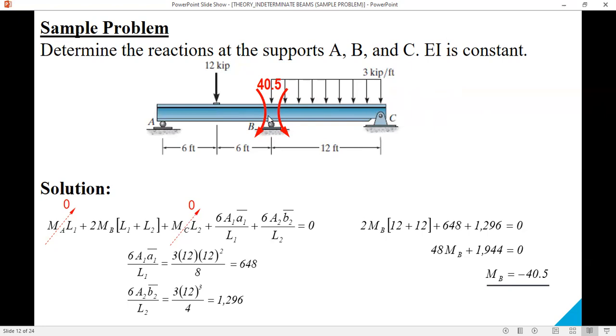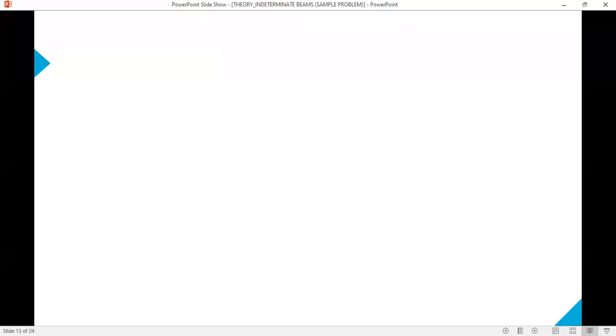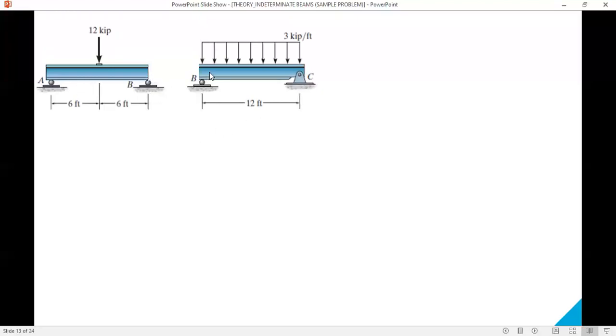The next step is we cut a section at B and then we separate span AB and span BC and then we solve for the reactions. We have span AB and span BC, and then we apply the moment at B, 40.5, and for the right span 40.5. Consider span AB a simple supported beam, also span BC. So we have RA, RB1, RB2, and RC.